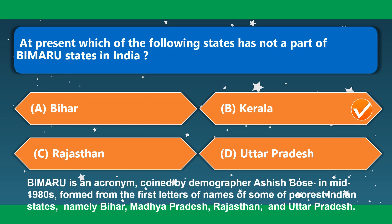At present, which of the following states is not part of the BIMARU states in India? This is Kerala. BIMARU is an acronym coined by demographer Ashish Bose in the mid-1980s, formed from the first letters of Bihar, Madhya Pradesh, Rajasthan and Uttar Pradesh — some of the poorest Indian states.